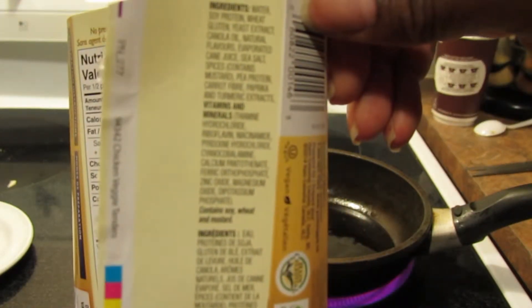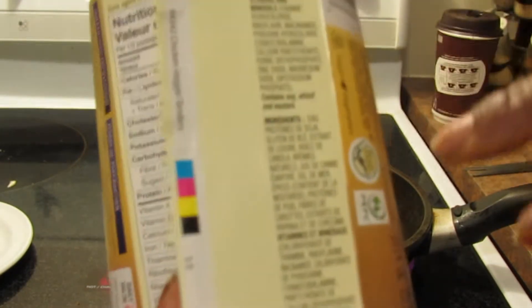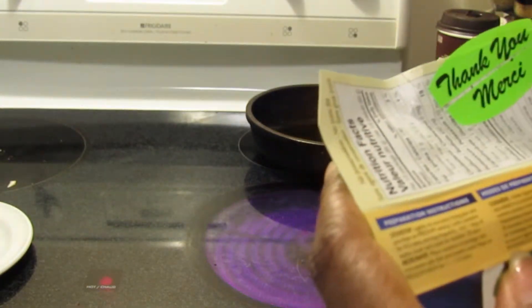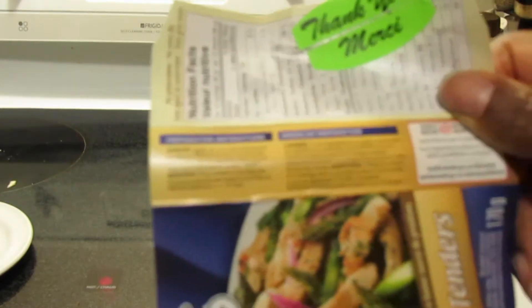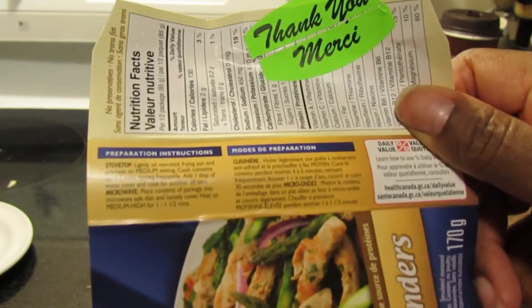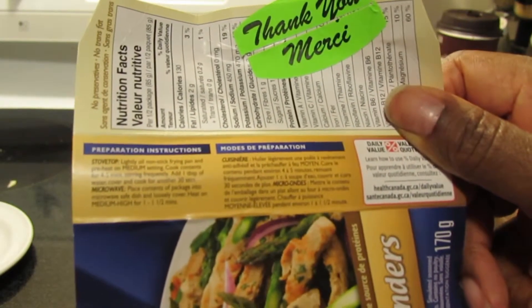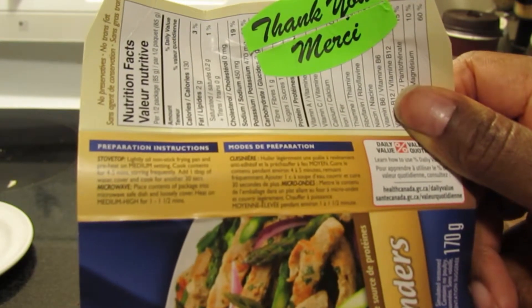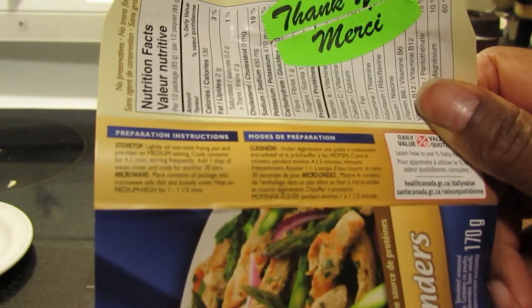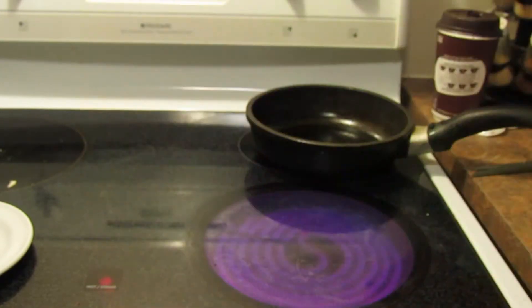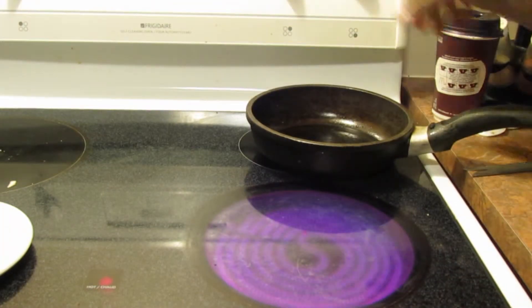And the directions: lightly oil a nonstick frying pan and preheat on medium. Cook for four to five minutes, stirring frequently. You can add a tablespoon of water, cover, and cook for another 30 seconds. That's stovetop.